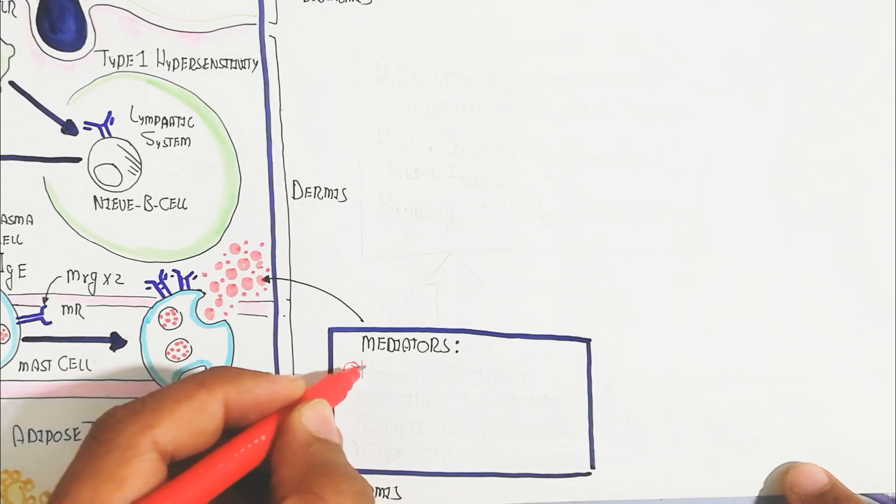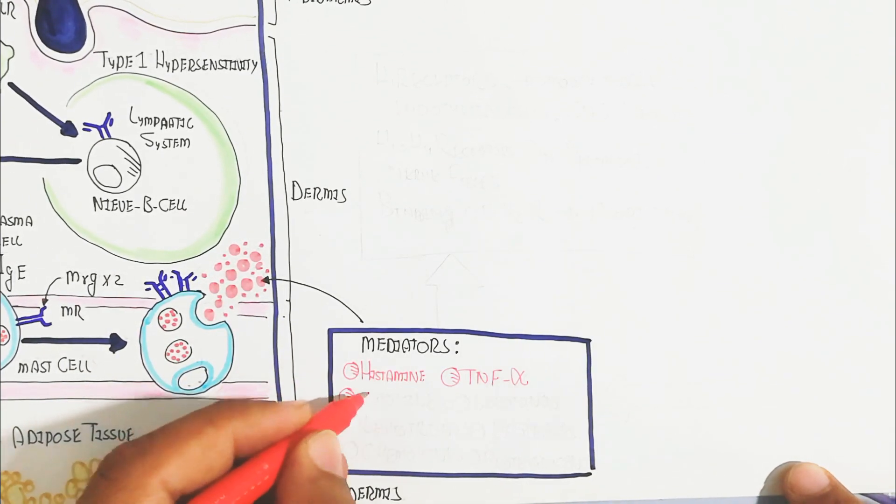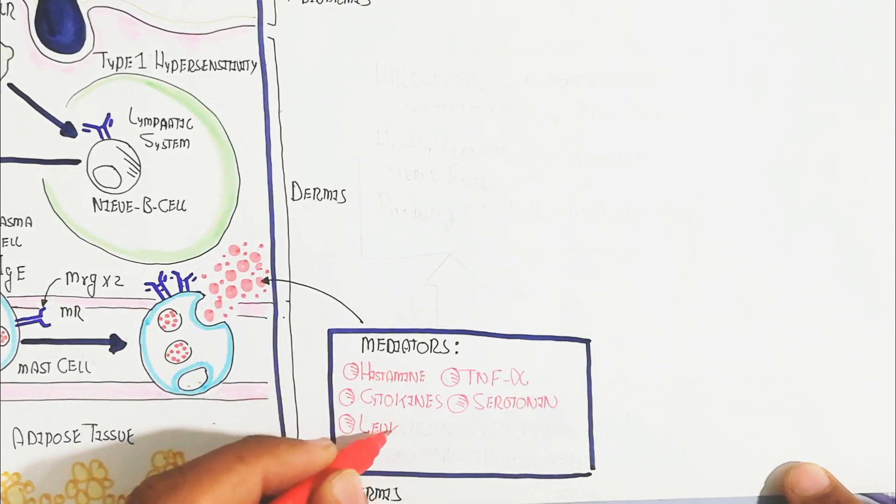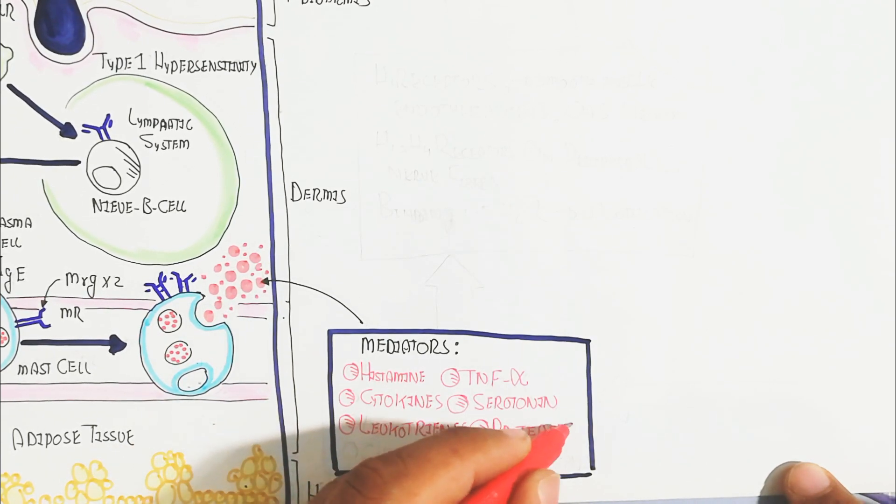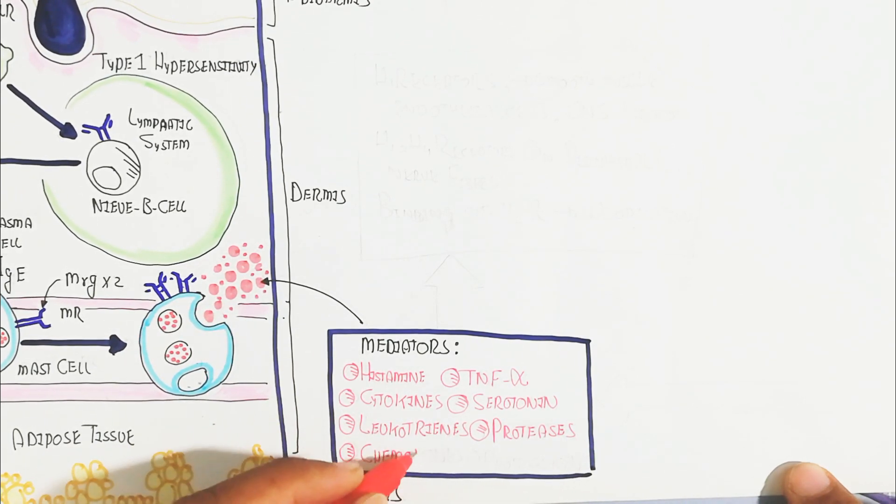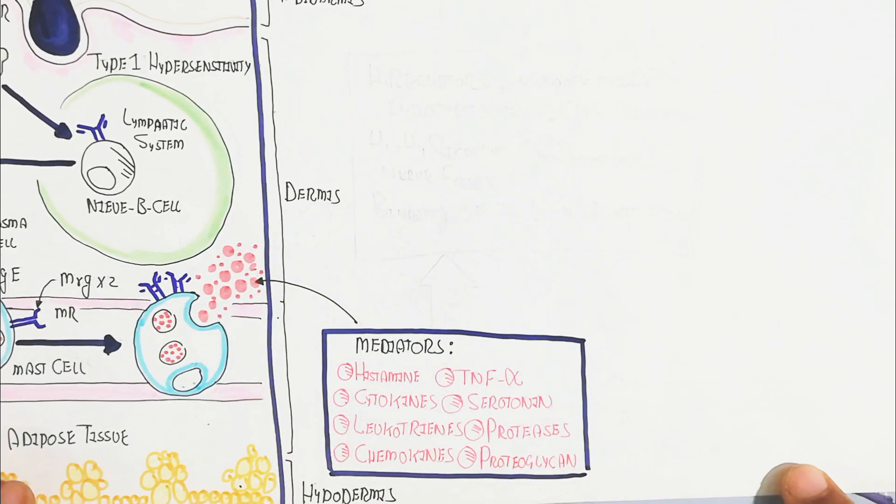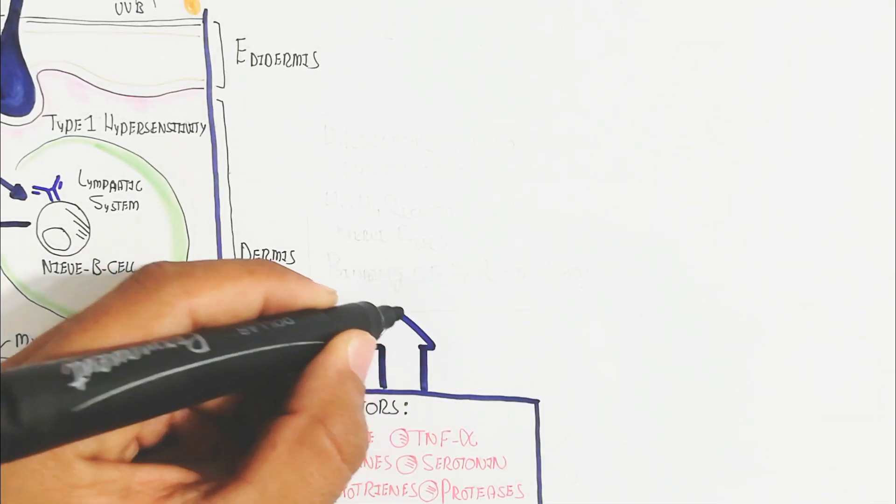Histamine is a major one, and tumor necrotic factor alpha, cytokines, serotonin, leukotrienes, proteases - different types of proteases - and chemokines as well as proteoglycans.